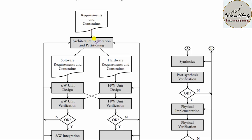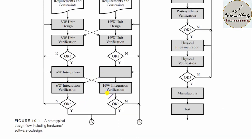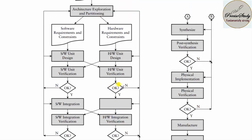Next, you have to undergo architecture exploration and partitioning — classifying which falls under hardware and which falls under software. You design and verify with the help of opposite blocks: software needs to be verified with the help of hardware, and hardware should be verified with the help of software. If both are okay, you proceed with software integration as well as hardware integration and verification. If everything is good, then go for synthesis and post-synthesis verification.